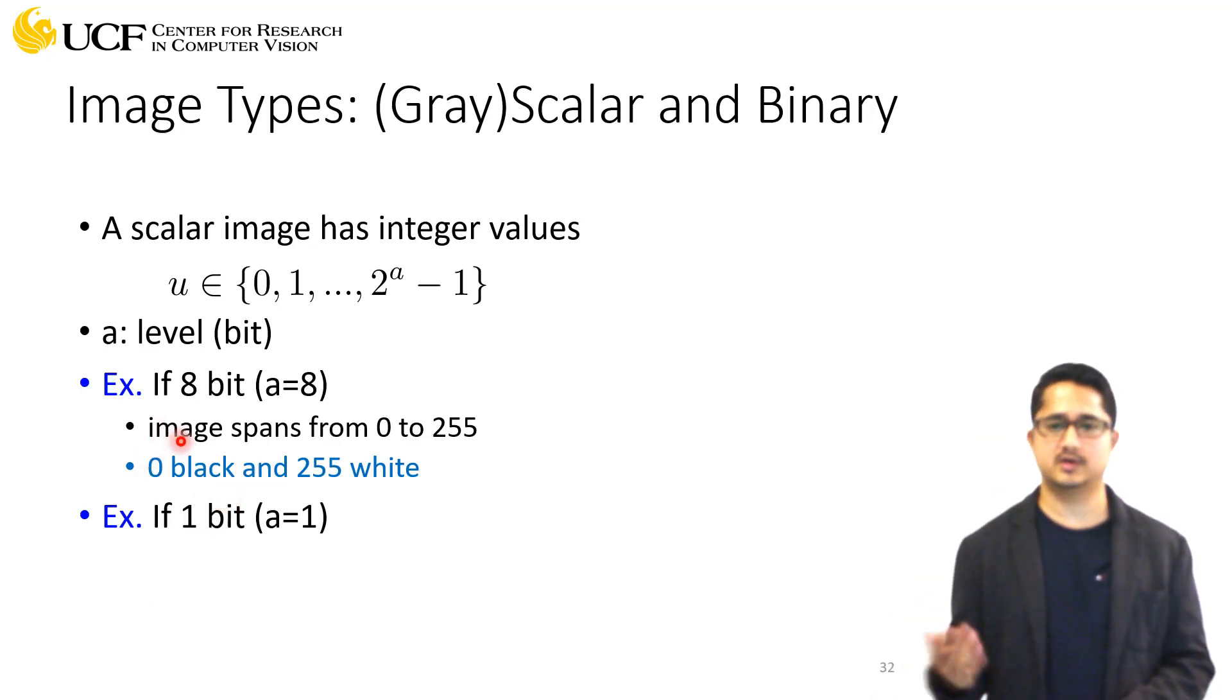If you have a bit level more than one, it's a grayscale image because you'll have more details about each pixel.